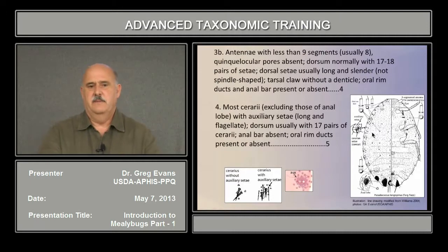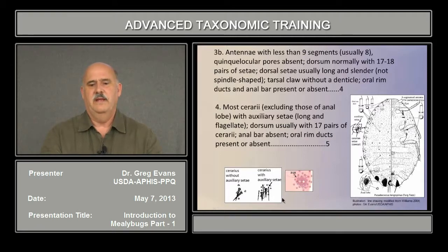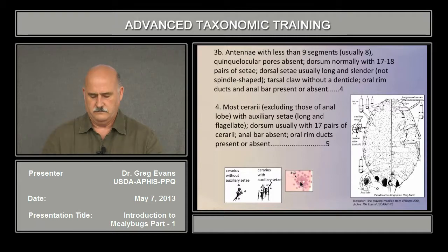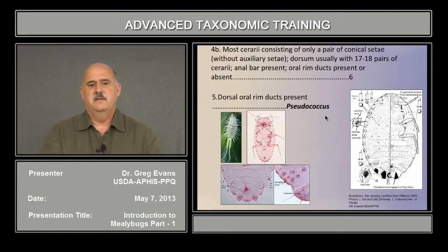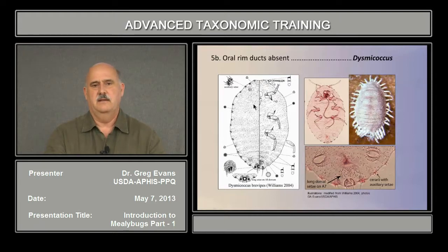Species with fewer than nine segments — usually eight antennal segments — no quinquelocular pores, and normally 17 or 18 pairs of cerarii. Most in this couplet will have auxiliary setae around the cerarii. Normally a cerarius has a pair of conical setae and some trilocular pores, but when auxiliary setae are present they also include flagellate setae within the cluster of trilocular pores. Pseudococcus also has oral rim ducts, distinguishing it from Dysmococcus, which also has auxiliary setae but lacks oral rim ducts. So again it's a combination of characters that defines the genus.